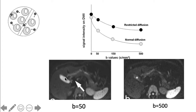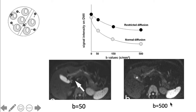We also notice here that the water within the bile is bright because of its slow flow. If we compare it with a higher B value, there is a relative signal loss in the slow-moving bile. Therefore, we say that higher B values are sensitive to both fast and slow-moving water.